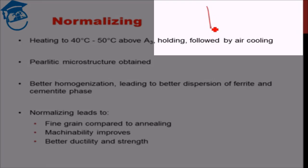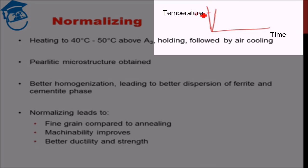Similar to full annealing, what we do in normalizing is heat the body above the upper critical temperature — about 40 to 50 degrees Celsius above A3 — hold at that temperature for a sufficiently long time, and then cool it in air. Thereby the cooling rate is faster than that for the annealing process.